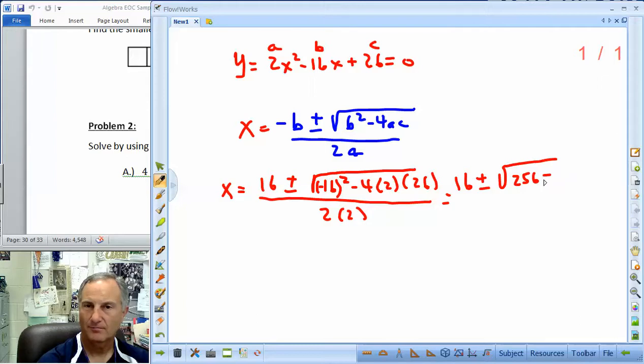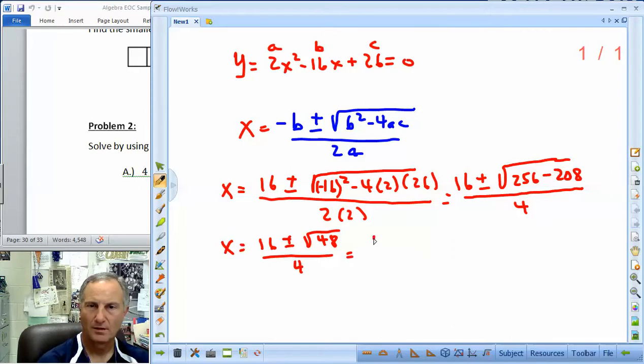So that's going to give us 16 plus or minus. Negative 16 squared is 256. Negative 4 times 2 is negative 8. Negative 8 times 26. That's 208. So we've got a negative 208 or minus it. And that's all over 4. So x is equal to 16 plus or minus the square root 256 minus 208 is 48 all over 4. That's 16 plus or minus. Now, 48 is 16 times 3. And you can take the square root of the 16. It's 4.